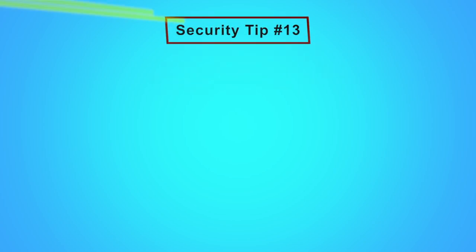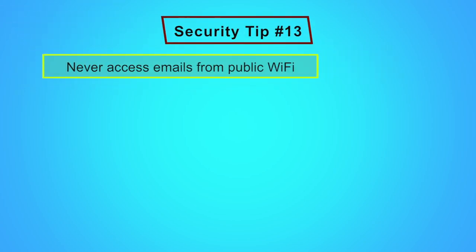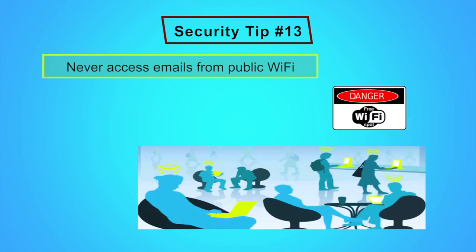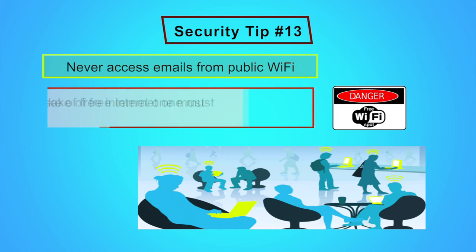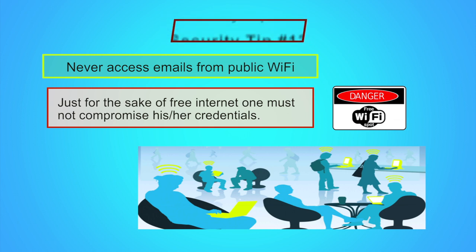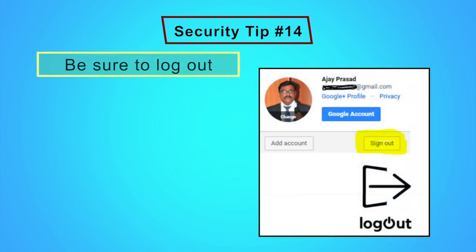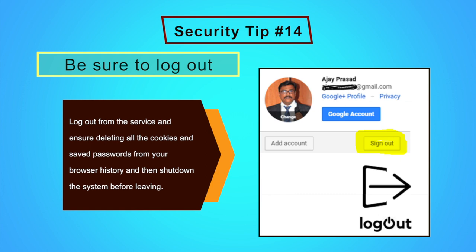Security tip number thirteen: never access emails from a public Wi-Fi. Public Wi-Fi networks are many times compromised and also used as phishing tools. Once you enter your password over an unsecured Wi-Fi, you are vulnerable as to where your passwords are going and getting logged. Just for the sake of free internet, one must not compromise their credentials. Security tip number fourteen: be sure to log out. If you are using a public PC or a system which will be used next by someone else, you never know who it will be and in which way your logged-in email service can be used maliciously. Log out from the service and ensure deleting all the cookies and saved passwords from the browser history, then shut down the system before leaving.